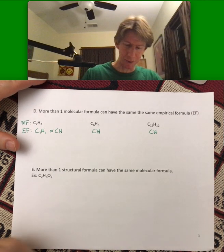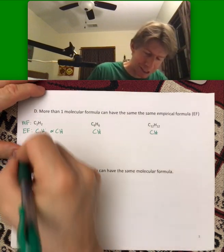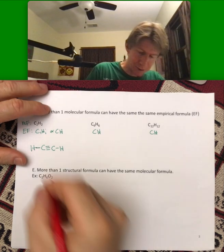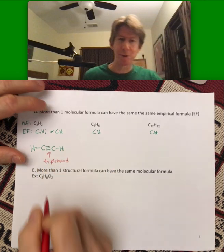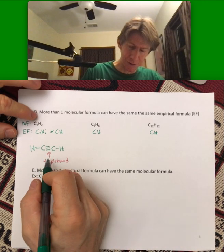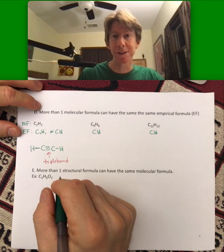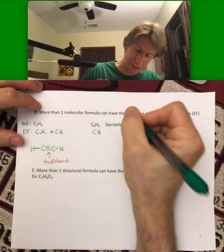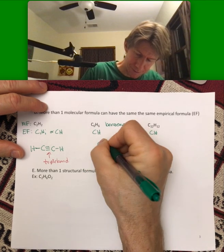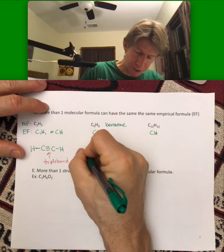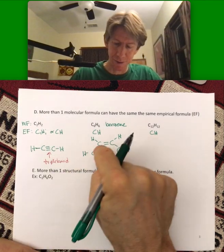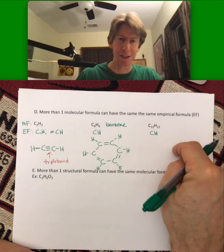I'll draw you a couple of these structures to prove to you that these are actual compounds. C2H2 has a triple bond between the two carbons. We don't have to know this yet, but I'm showing it to you for future information. C6H6, at least the most common example I can think of, is benzene, a six-member carbon ring with hydrogens around it.